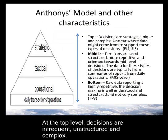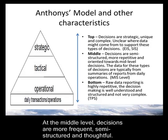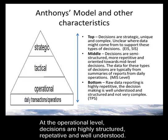Different levels of organizational decision-making have different decision-making characteristics. The purpose of information systems is to support organizational decision-making — supporting people trying to make decisions that make the company run better, more efficiently, or more effectively. At the top level, decisions are strategic, unique, and complex. We might not even know where exactly the data to support those decisions will come from. At the middle level, the decisions are semi-structured, more repetitive, and oriented towards mid-level decision-making.